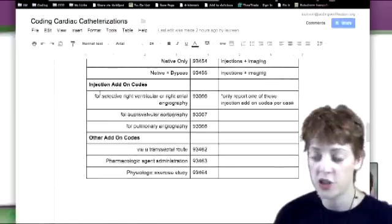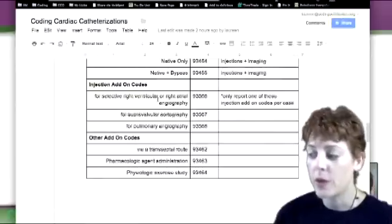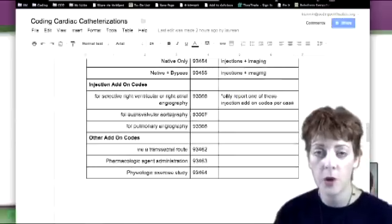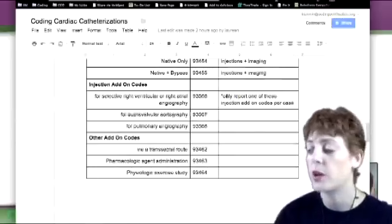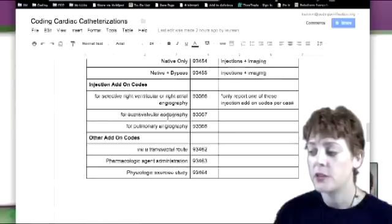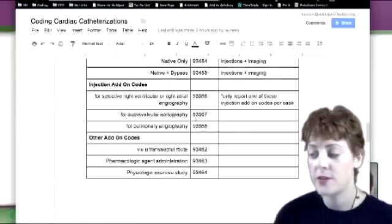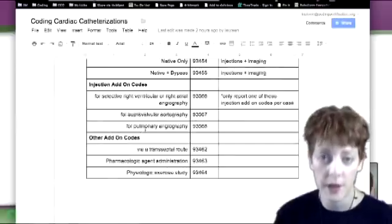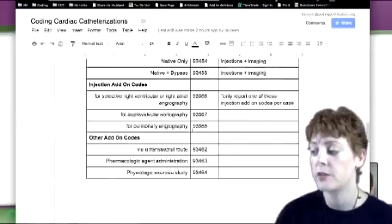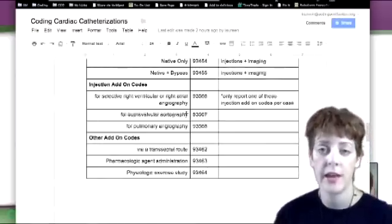Now here's some add-on codes, injection add-on codes. The right ventricular or right atrial angiography is not included. A lot of coders think that it is in the codes that I just went over for the right heart cath. It's not. This is an add-on code. You're allowed to bill that if it was done. If they do an aorta imaging of the aorta, that's your 93567. If they do of the pulmonary vessels, pulmonary angiography, it's 93568. So these codes can be added on to one of the primary catheterization codes.